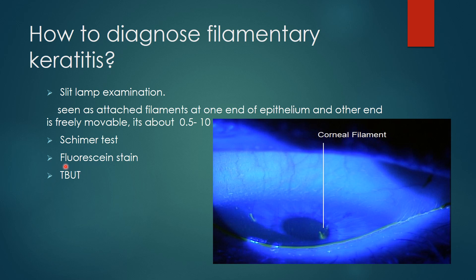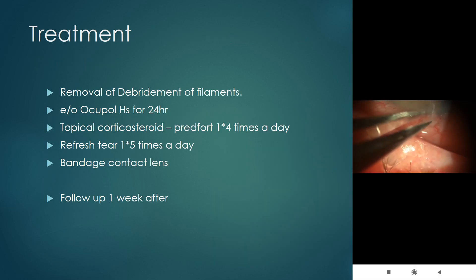Treatment involves removal and debridement of the filaments. Apply an ocular patch for 24 hours, topical corticosteroids four times a day, refresh tears five times a day, and a bandage contact lens. Follow up after one week. To see how debridement is done, play the video — you can see the white-colored mucus or filaments being removed.